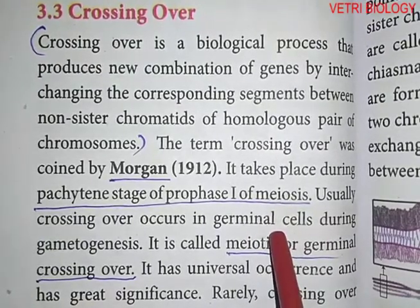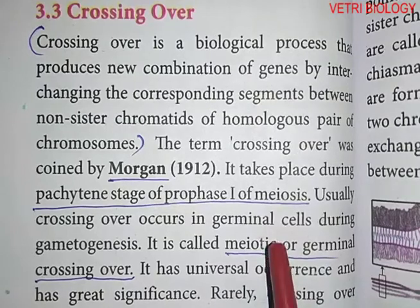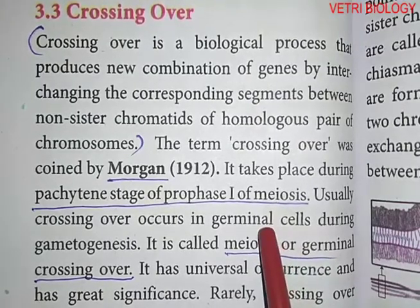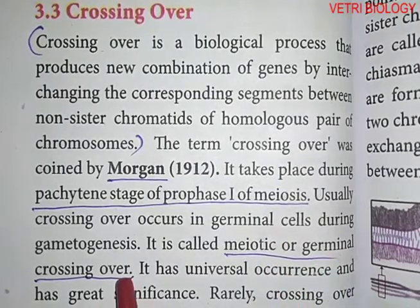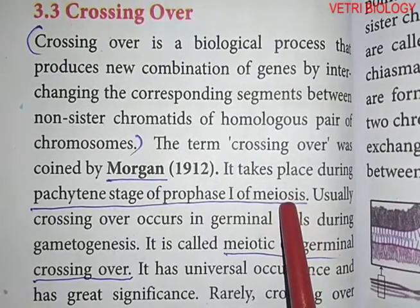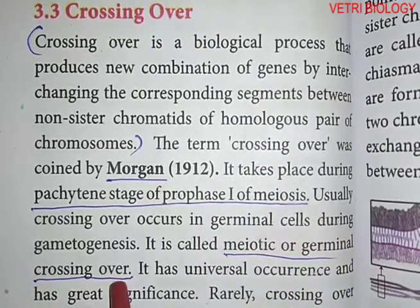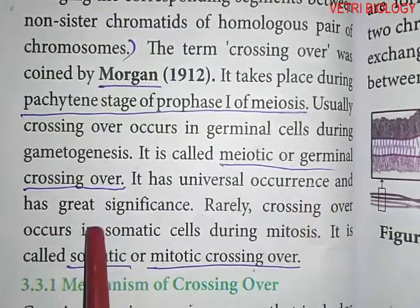Sperm in males and egg in females are the gametes produced by germinal cells. Crossing over takes place in these germinal cells, so it is called germinal crossing over. It takes place in meiotic cell division, so it is also called meiotic crossing over. It has universal occurrence and great significance.